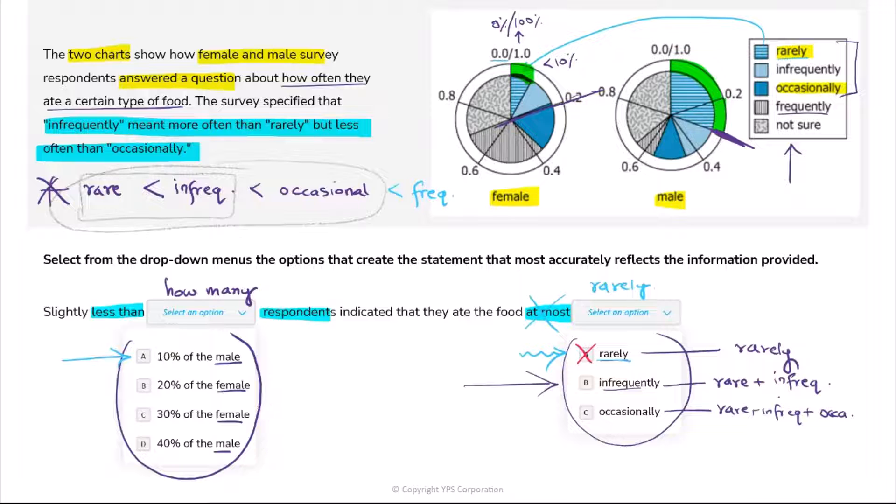Which means rarely is not the answer for the second blank. Now I pick up the next one. So we repeat the process, and this time we will take infrequently here. So at most infrequently now has some meaning. At most infrequently, we know, means rare plus infrequent. You'll take those two categories together.